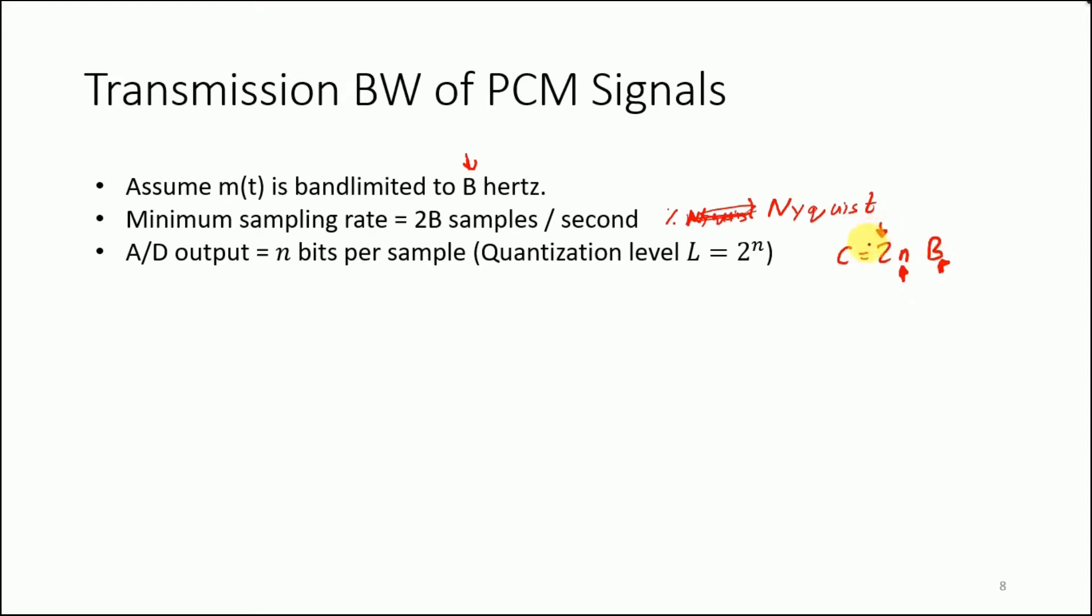We note that the minimum channel bandwidth is bit rate by 2. Why is it so? This is because we have previously mentioned that for 1 Hertz of a channel, you can send 2 bits per second.